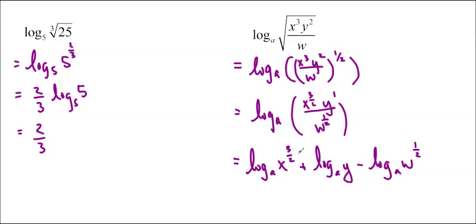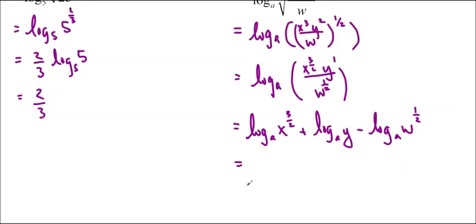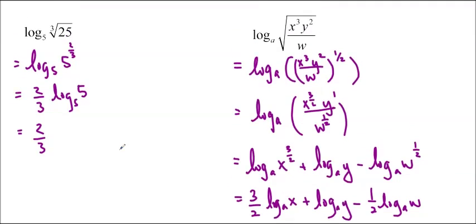And now the last thing we're going to do is bunny hop these guys out, so that we don't have any exponents going on. The answer is 3 halves log base A of x, plus log base A of y, minus 1 half log base A of w. Okay, so those are our four examples. Hopefully you understood it.